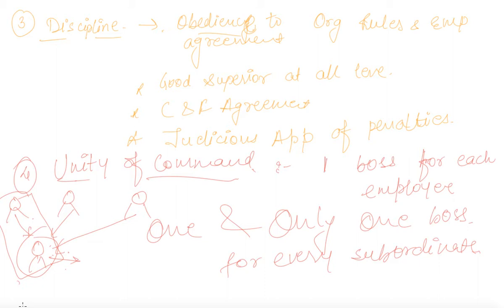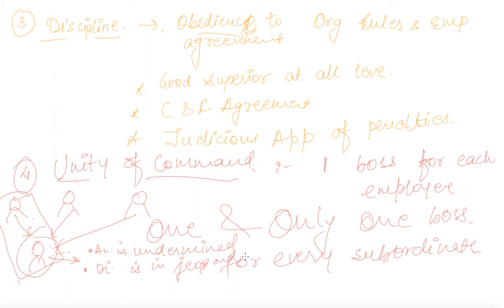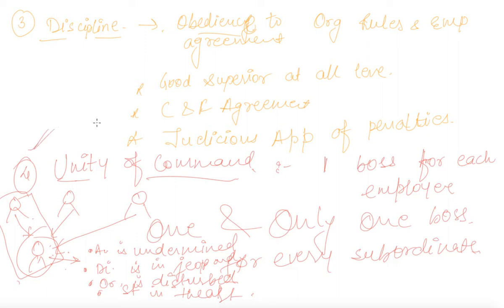If the principle of Unity of Command is violated, the consequences will be: authority is undermined, discipline is in jeopardy, order is disturbed, or even stability is threatened. These are the basic reasons why we are supposed to obey this principle.